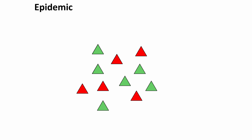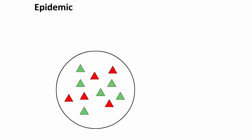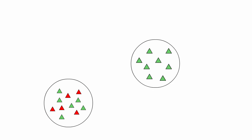What happens if the disease starts to move between populations? This is called an outbreak. An example would be an influx of the flu from a population in Asia to a population in Europe. Notice that it does not mean that the disease is occurring at a high rate. Rather, it simply means that the disease has moved between populations.